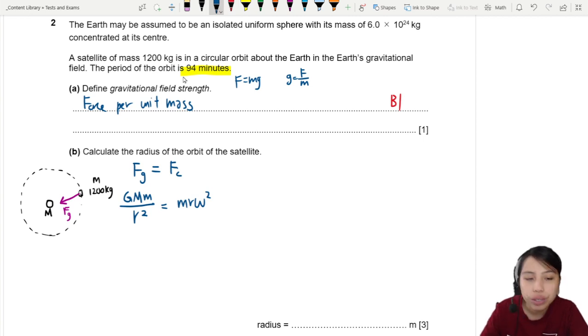What are we trying to find? Radius, right? So let's do a bit of rearranging. R: This will be G, M and M cancel out. So this will be GM over omega squared equals R cubed. In other words, R equals cube root of GM over omega squared.